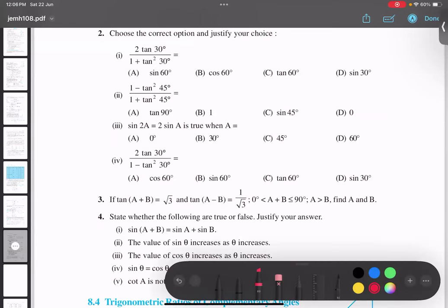Question number three is a very important question. If tan(A + B) equals root three, tan(A - B) equals one upon root three, after this information is actually of no use right now.